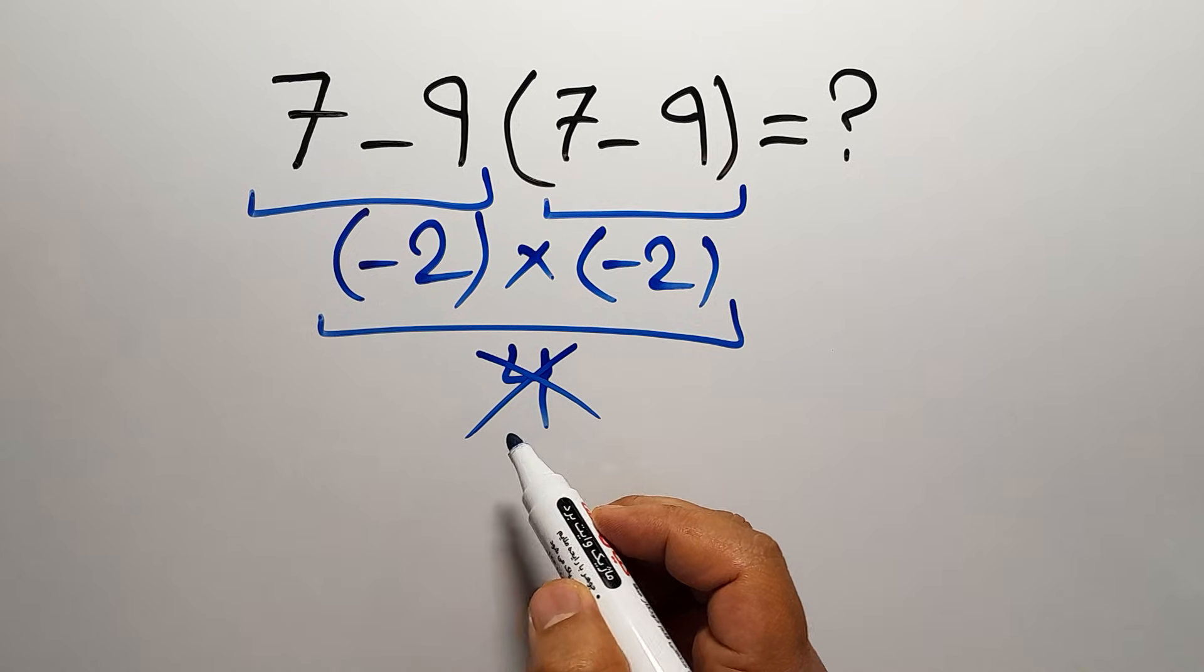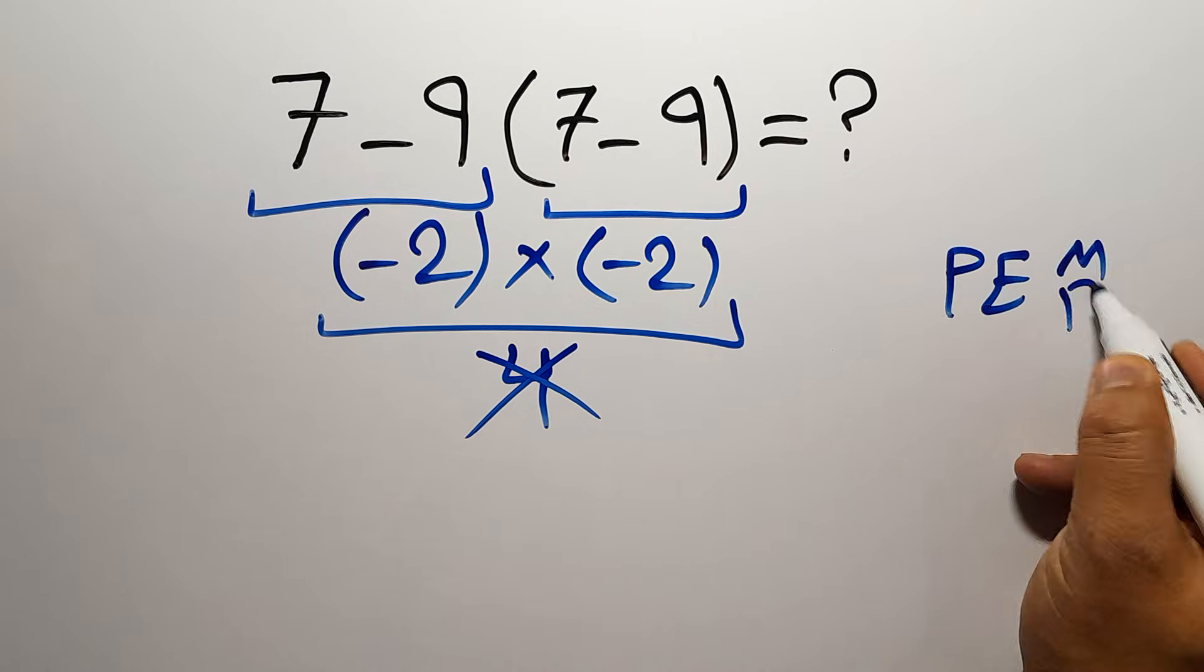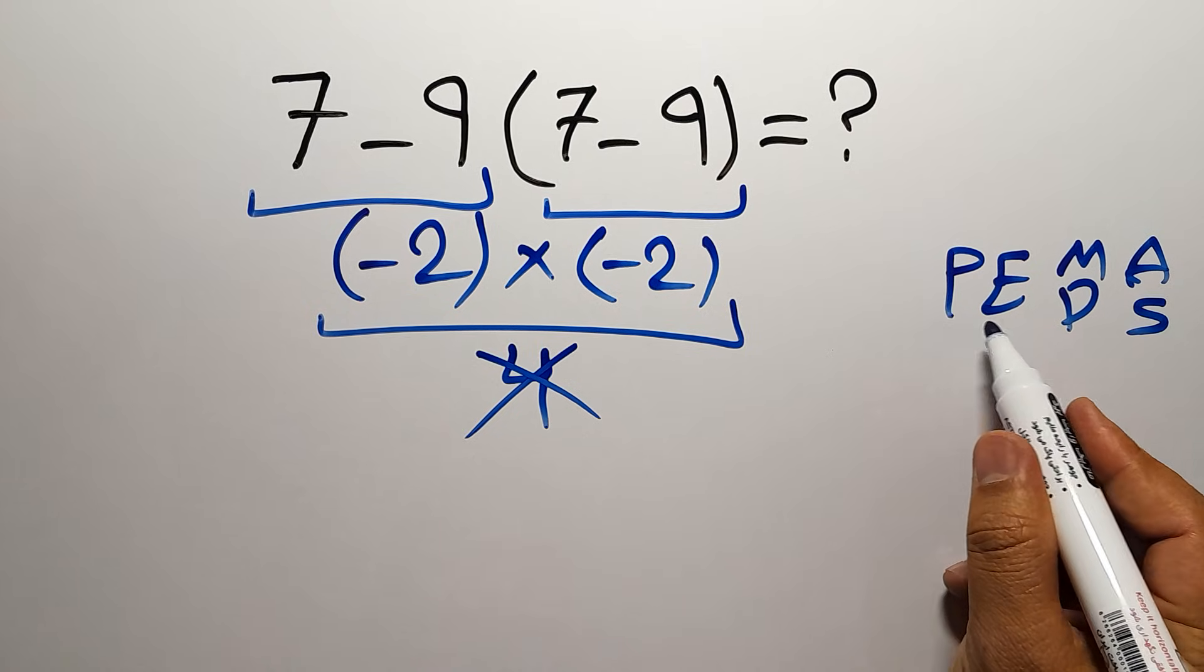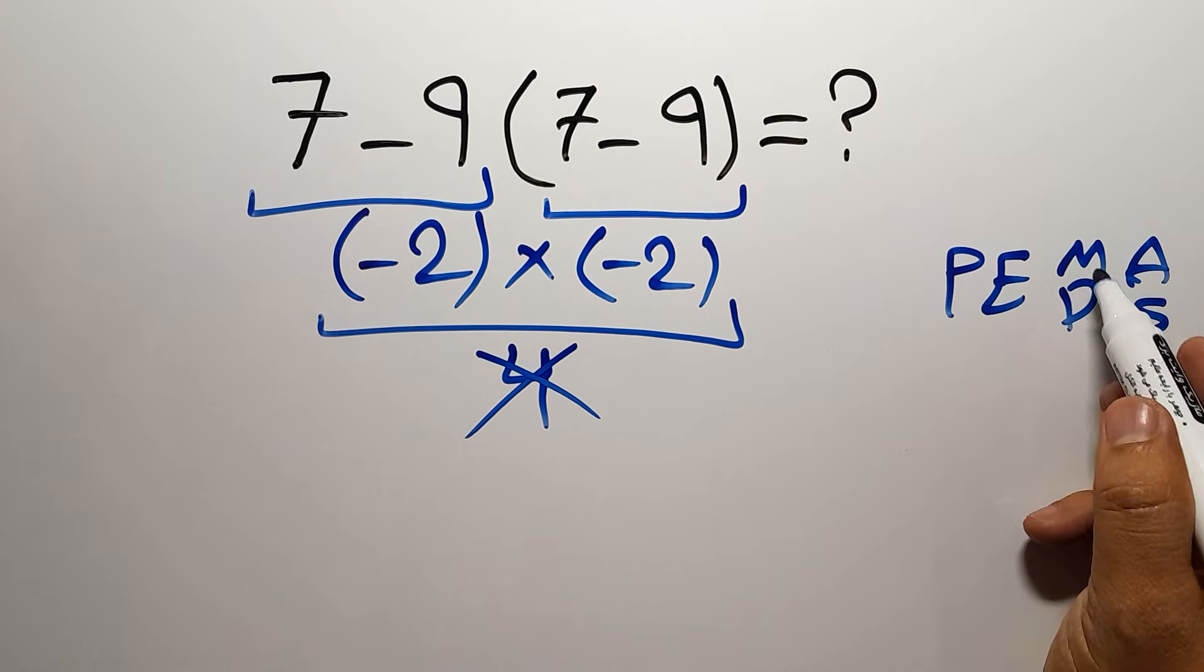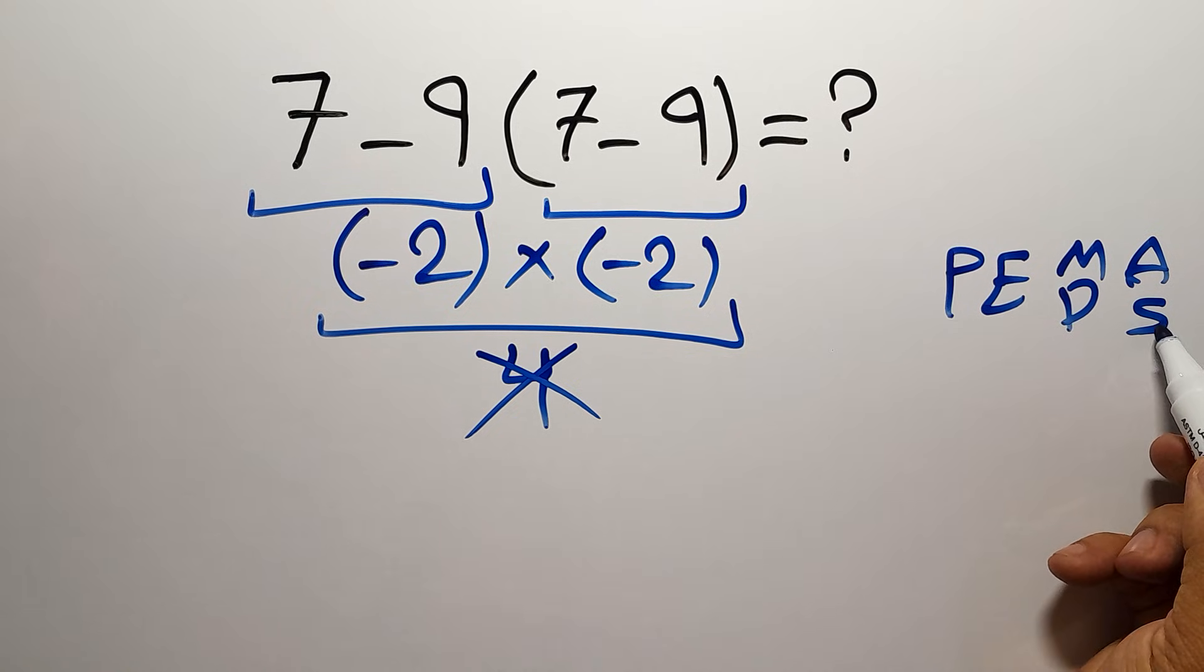Because according to the order of operations which is PEMDAS, P stands for parentheses, E stands for exponents, M and D stands for multiplication and division and A and S stands for addition and subtraction.